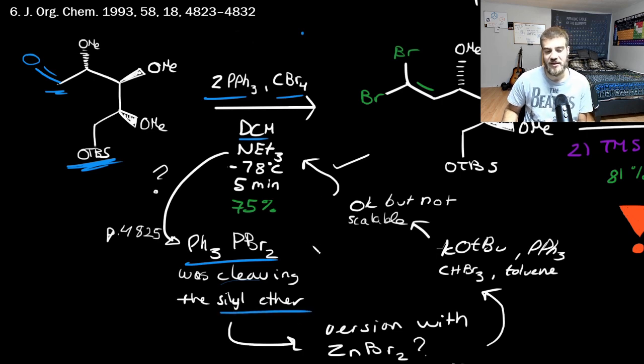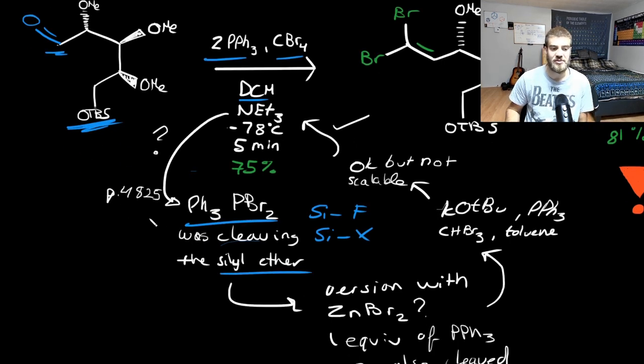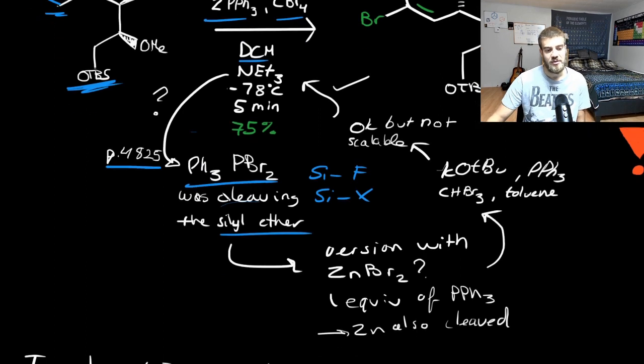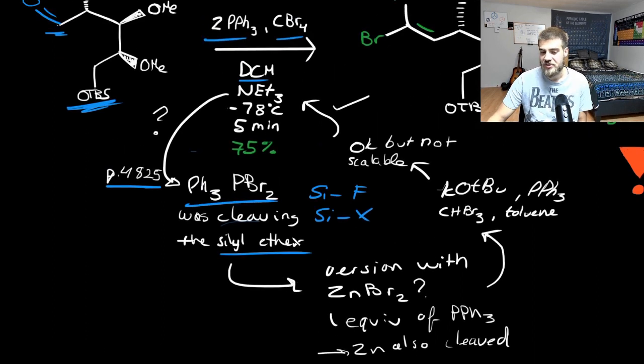And this has bromide on it, bromine rather. And this could cleave the xylyl ether. And in the last episode, I talked about the TBAF to deprotect the silyl ether, because the Si-F bond is really strong. But Si-X, X being halogen, is also really strong. So this molecule could deprotect, at least that's what they thought, their xylyl ether.